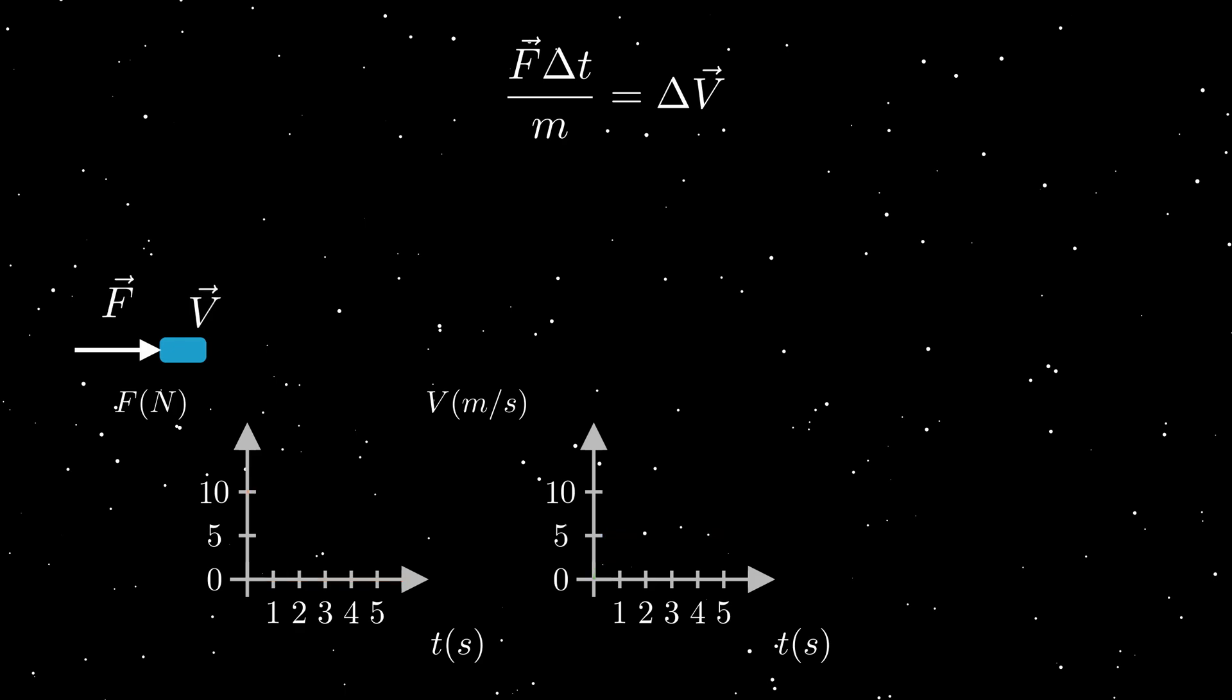Now one interesting thing you notice about this graph is that 10 units of force applied for 0.5 seconds gave us 10 times 0.5 equals 5 units of speed. Here I have assumed the mass of the object is one unit or one kilogram. We can also say that the body has accelerated for 0.5 seconds with each second gaining 10 meters per second, so in total the speed it gained is 5 meters per second.